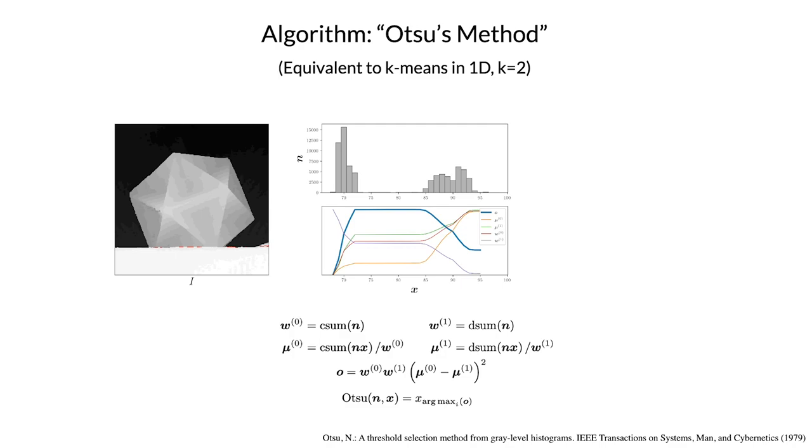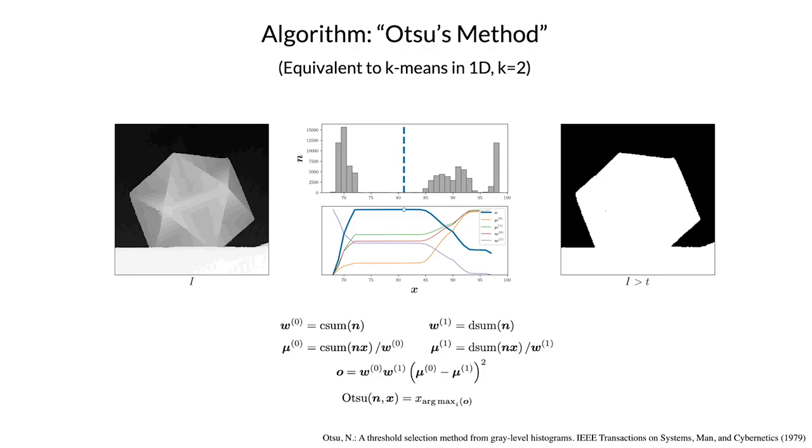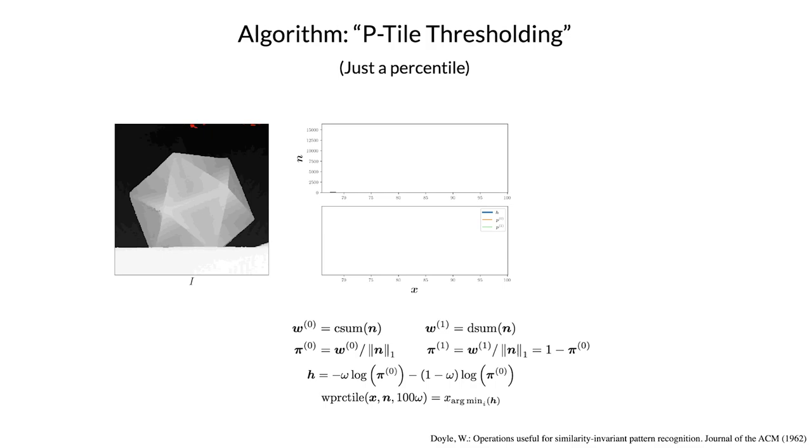Here's Otsu's method, which is effectively a fast way of solving k-means in 2D, where k is equal to 2. This is probably one of the most effective classic algorithms for this task, and it does the right thing here.